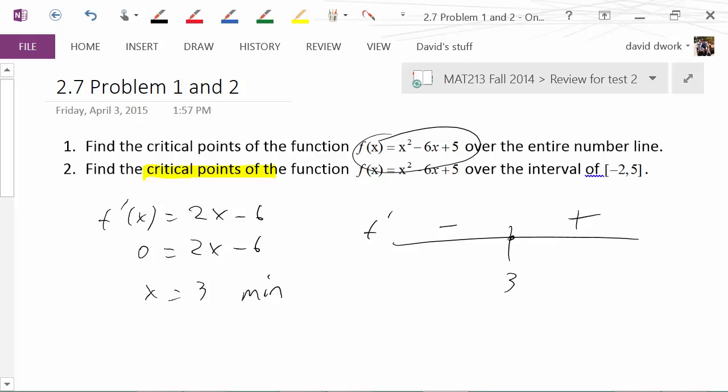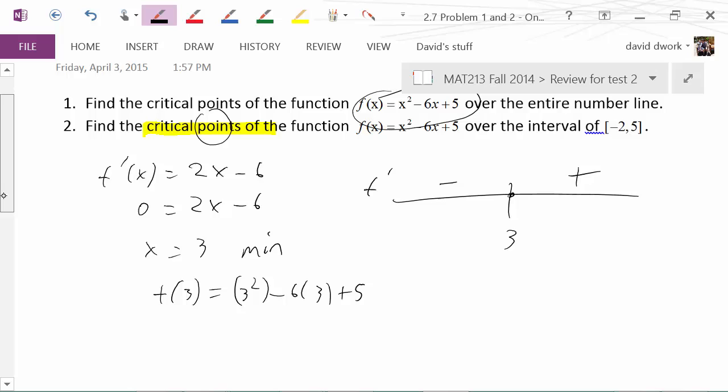And we can figure out what it is because the first derivative is telling us the graph is decreasing and now the graph is increasing. Therefore we know at the x value of 3 we have a minimum. Now to actually find the critical - now notice it doesn't say critical number. The critical number would be x equals 3. It wants a point.